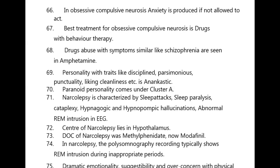In obsessive compulsive neurosis, anxiety is produced if the patient is not allowed to act. The best treatment for obsessive compulsive neurosis is drugs with behavior therapy. Drug abuse with symptoms similar to schizophrenia is caused by amphetamines. Anankastic personality traits include discipline, parsimoniousness, punctuality, and liking cleanliness. Paranoid personality comes under cluster A.